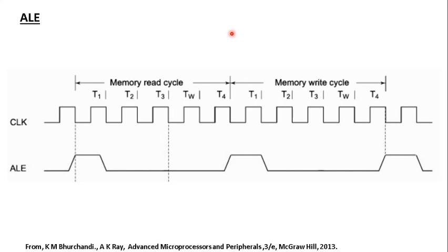Now we will see the roles of individual signals and how they control the bus operation. First, the Address Latch Enable (ALE) signal is used to enable the latches that carry address information from the multiplexed address-data lines of the CPU. When ALE is active, the current output from the multiplexed lines is an address. At T1, the address is output by the CPU and ALE is enabled, giving valid addresses. By the end of T1, ALE is deactivated, and the multiplexed lines then serve as data lines.